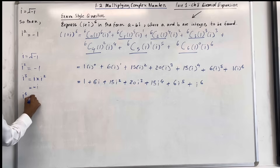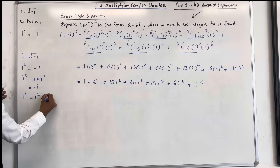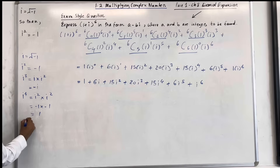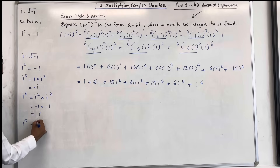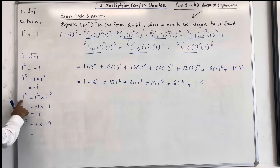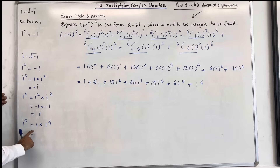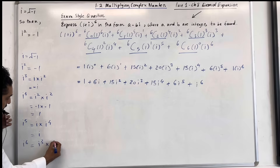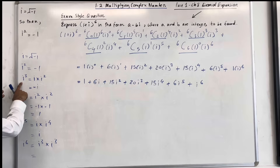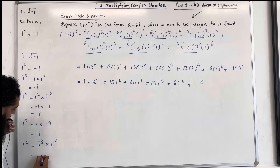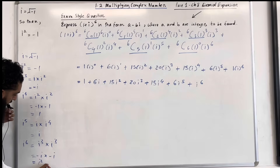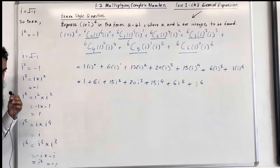Then we have i to the power 4, which is the same as i squared times i squared: minus 1 times minus 1, which is 1. i to the power 5 can be written as i multiplied by i to the power 4. We know i to the power 4 is 1, so i times 1 is just i. i to the power 6 is the same as i cubed times i cubed. We know i cubed is negative i, so negative i multiplied by negative i gives i squared, which equals negative 1.